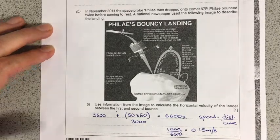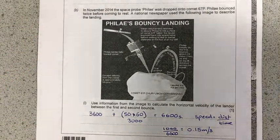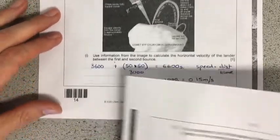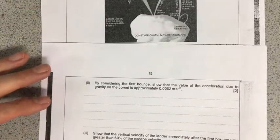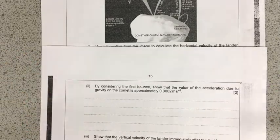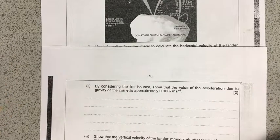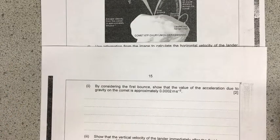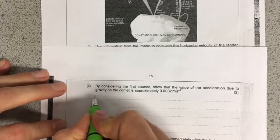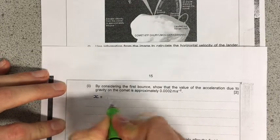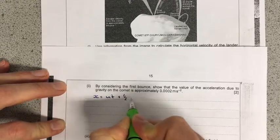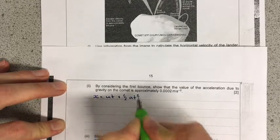So I'm going to flip over now for the next part of the question. I'm just going to slide this one up, though, because we'll need some of the stuff from this infographic. Now it says, by considering the first bounce, show the value of acceleration due to gravity on the comet. So what I've chosen to do for this one is, from my formula sheet, I'm going to use the equation x equals ut plus half at squared.